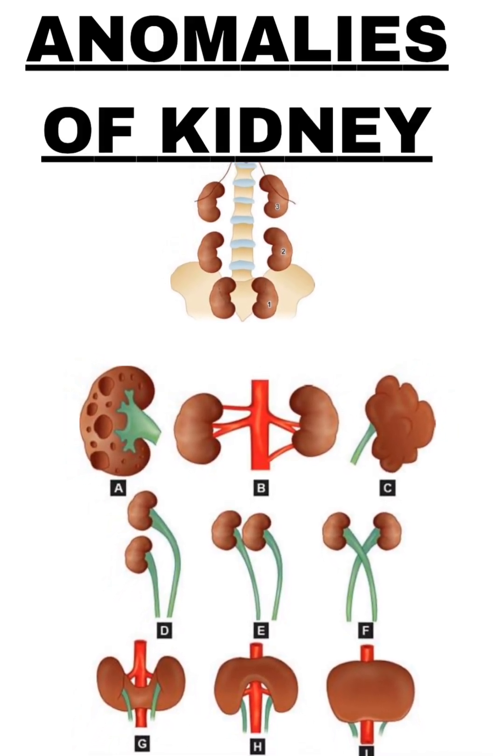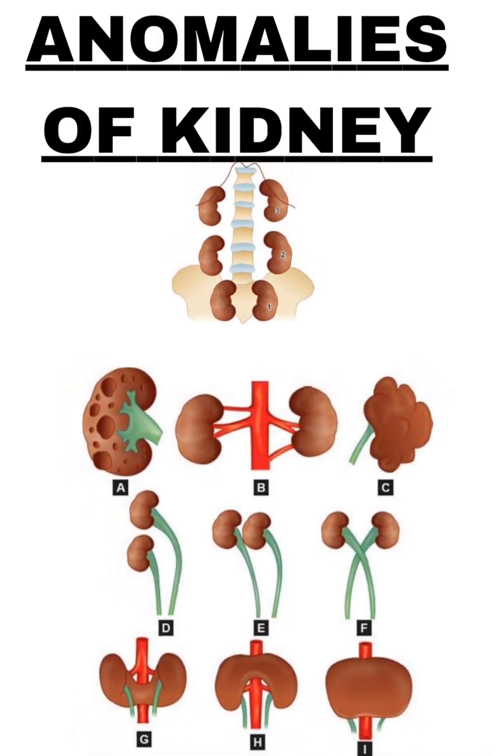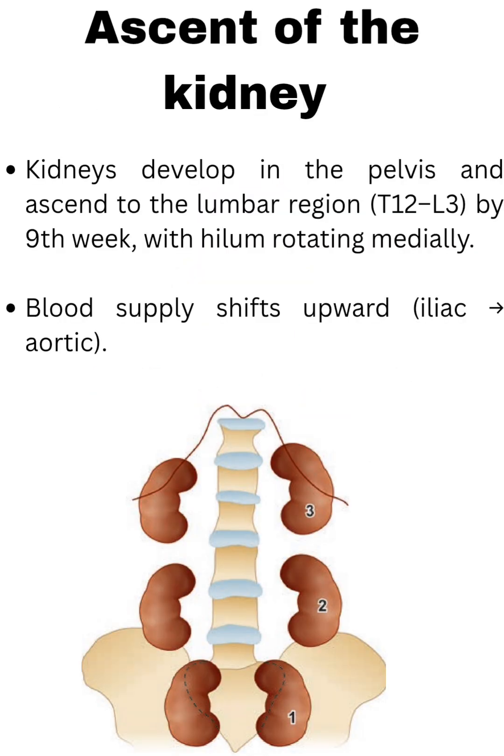Anomalies of the kidney. Ascent of the kidney: kidneys develop in the pelvis and ascend to the lumbar region, T12–L3, by the 9th week, with the hilum rotating medially. Blood supply shifts upward from iliac to aortic vessels.